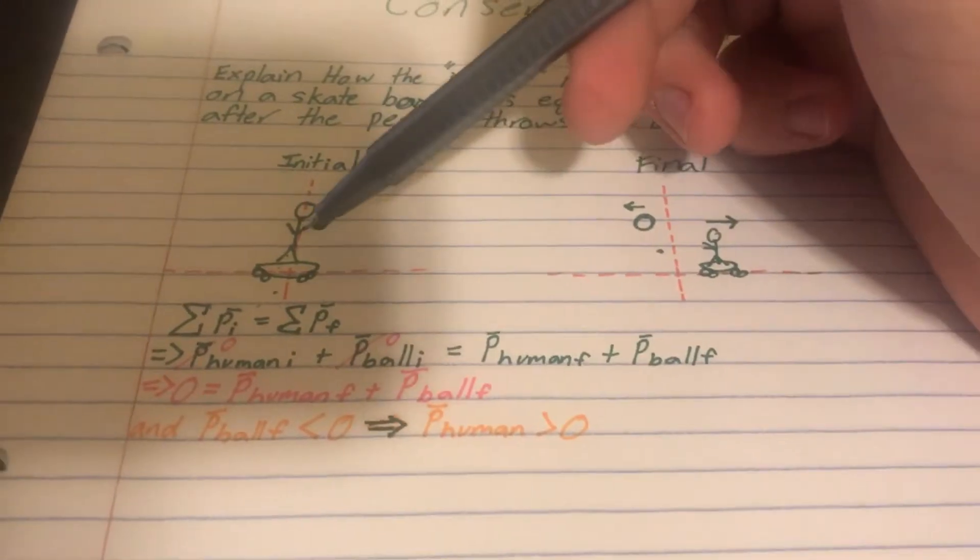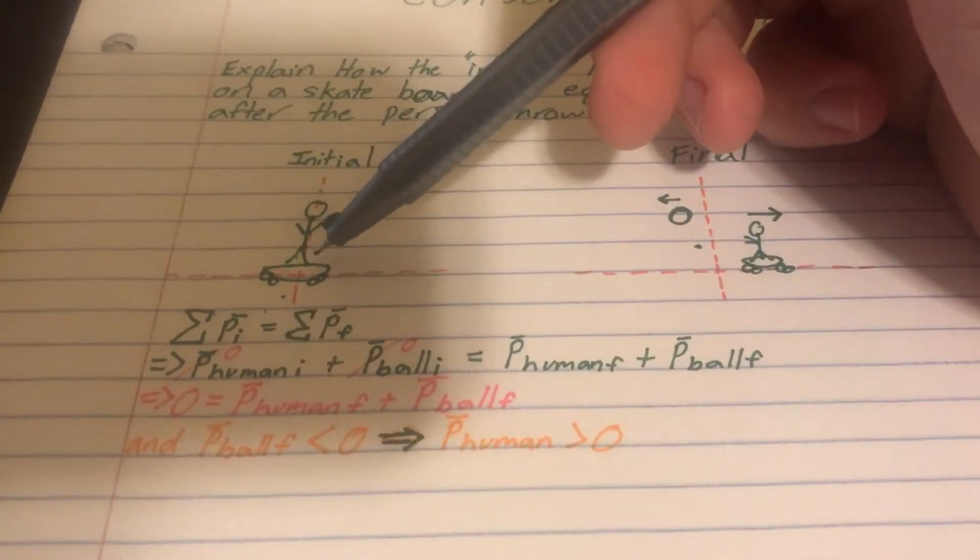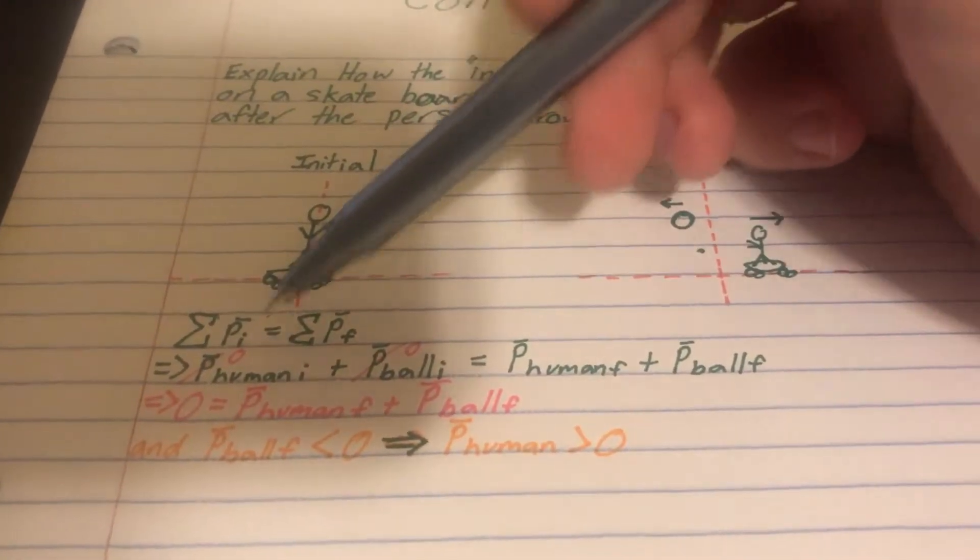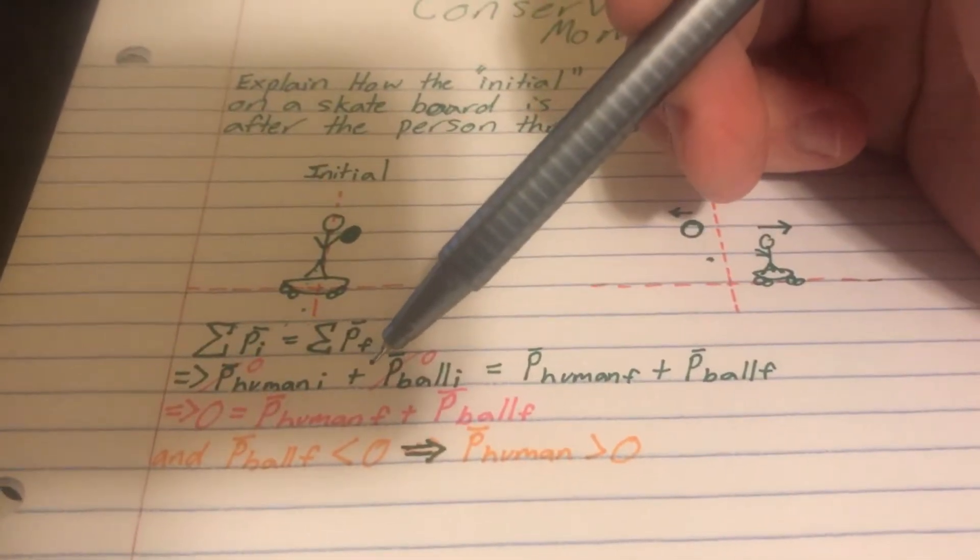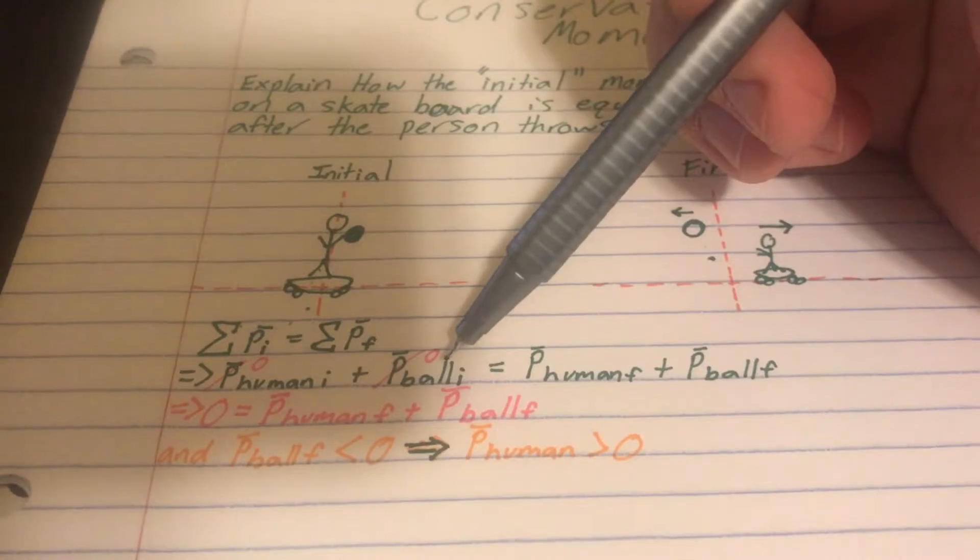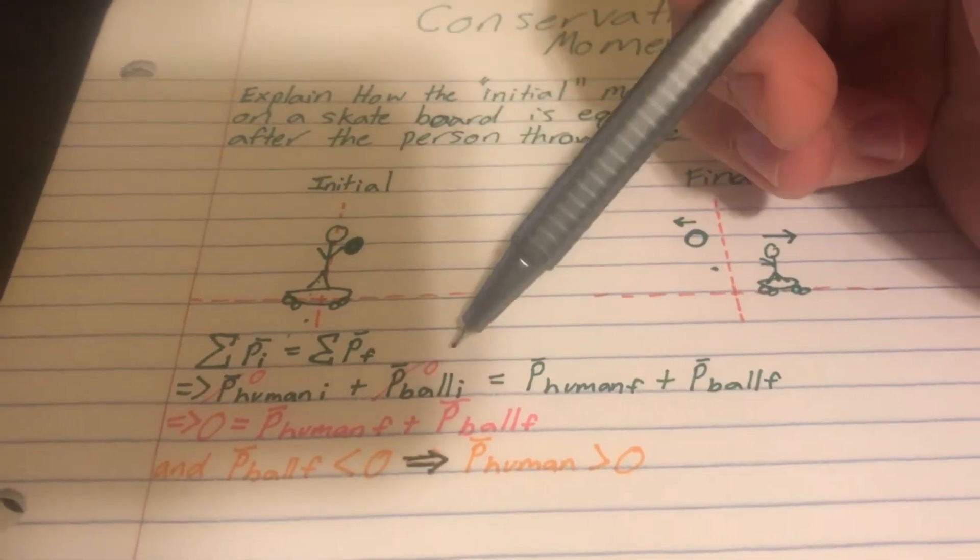So at this point, the momentum of the human initial is zero, so that cancels out. And the momentum of the ball initial is zero, so that cancels out.